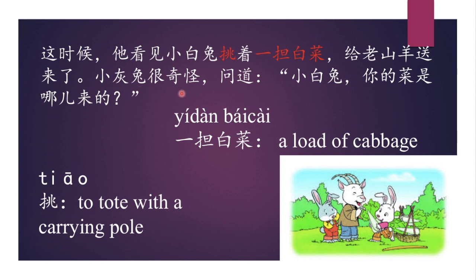小灰兔很奇怪。 奇怪 means surprised. The little gray rabbit was surprised. 問道 means asked. 小白兔，你的菜是哪兒來的？ Where did you get all the cabbage?